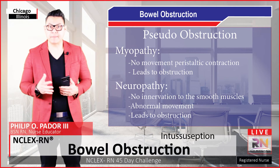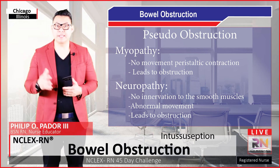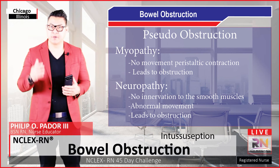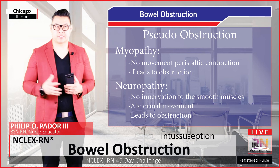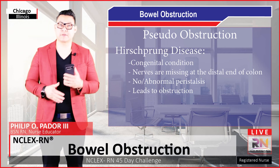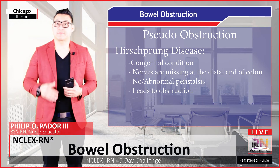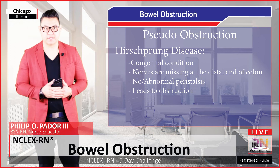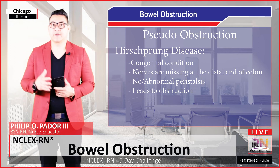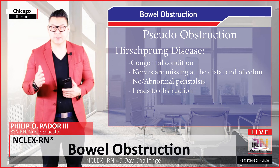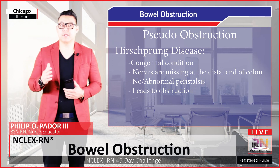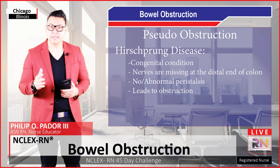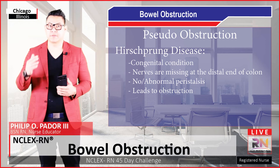Neuropathy — problems with nerve innervation of the bowel — means there is no innervation of the smooth muscle, resulting in abnormal movement and constrictions. Hirschsprung disease is a congenital condition present at birth where nerves are missing at the distal end of the colon; surgery can correct this. Regardless of the cause — pseudo-obstruction or mechanical obstruction — it results in obstruction, meaning substances we eat cannot pass through the bowel smoothly.